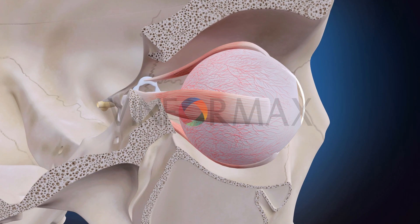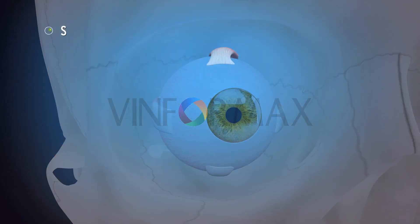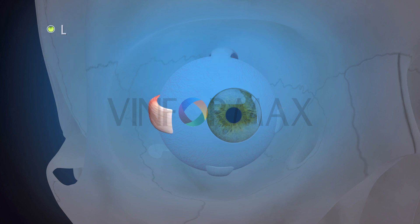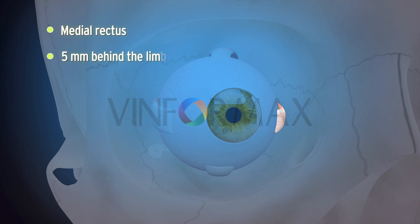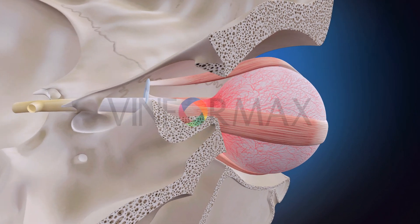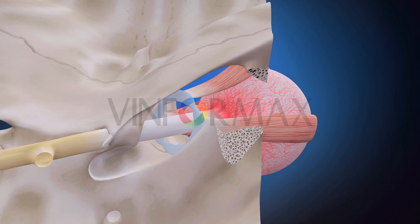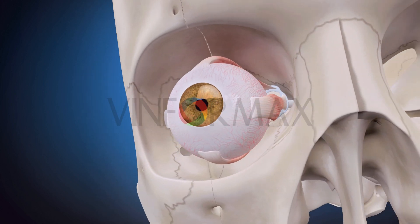The recti are inserted into the sclera in front of the equator of the eyeball. The superior rectus is inserted 8 mm behind the limbus, the lateral rectus 7 mm, the inferior rectus 6 mm, and the medial rectus 5 mm behind the limbus.